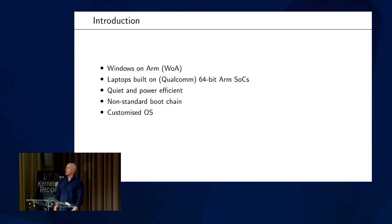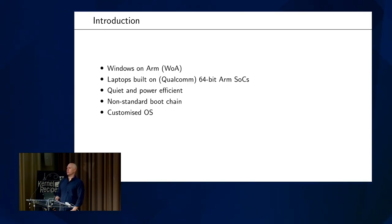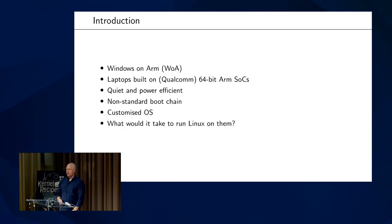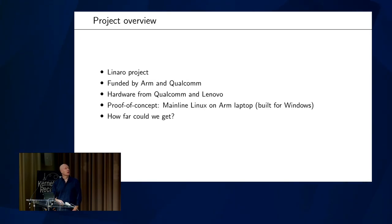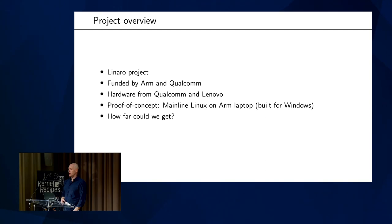Some of you have probably heard about the Windows on ARM marketing term, used for laptops built on 64-bit ARM SoCs. They tend to be built by Qualcomm, though that's not strictly a requirement, and run Windows. These devices have some nice properties — they are quiet and power efficient — but they also have some quirks. They come with a non-standard boot chain and rely on a fairly heavily modified, customized OS to run. The question naturally arises: what would it take to run Linux on these? This was the question that Linaro set out to answer in a project funded by ARM, also indirectly by Qualcomm. Qualcomm and Lenovo provided some hardware, and the idea was to do a proof of concept — is it at all possible to run mainline Linux on these ARM laptops built for Windows?